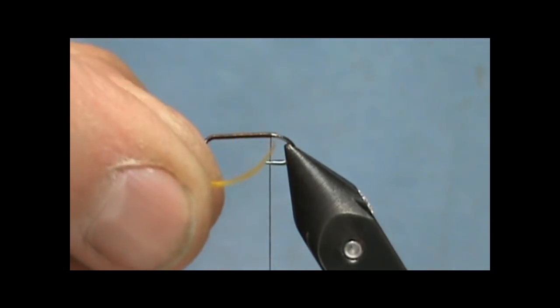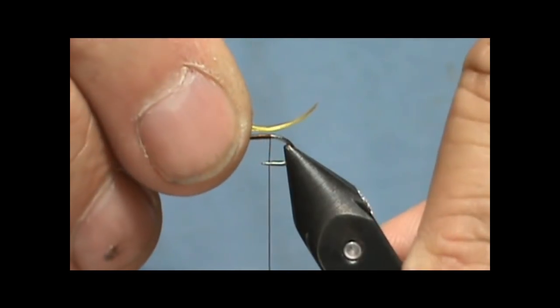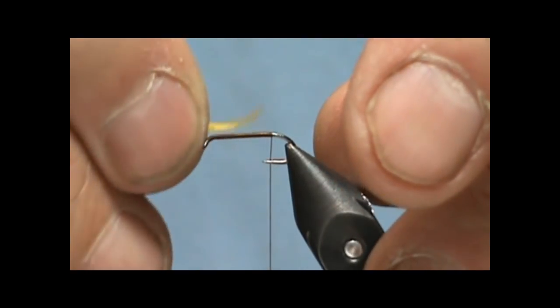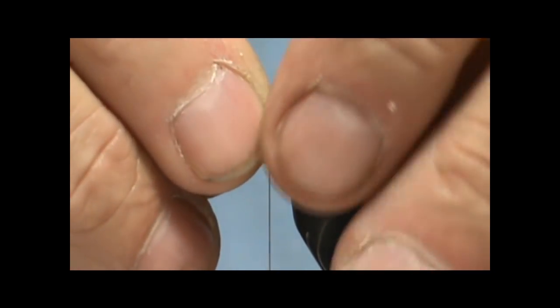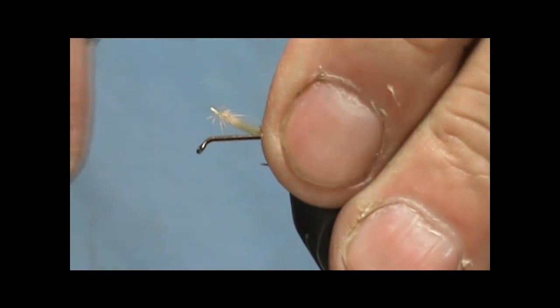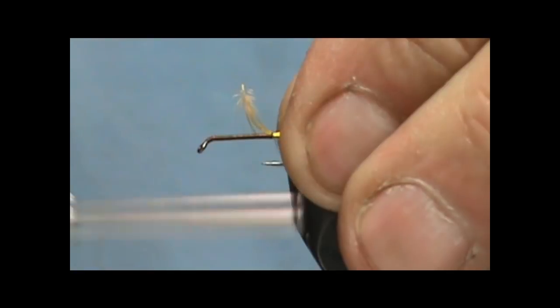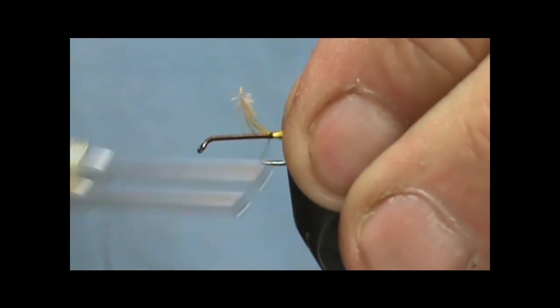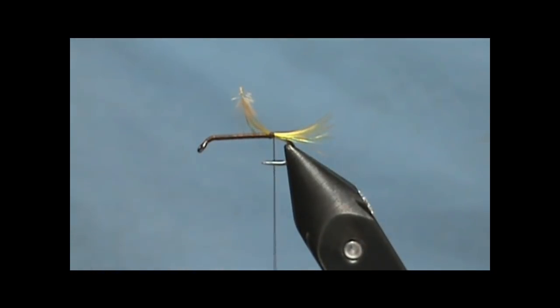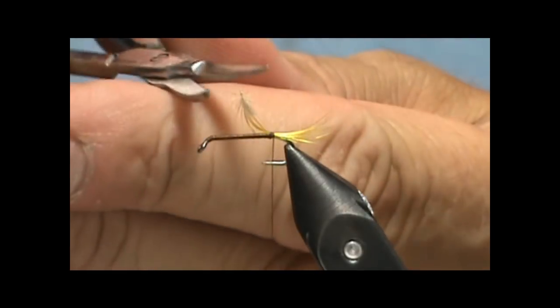I'm going to take golden pheasant crest for the tail and I want that to be about the length of the shank. Now we're going to secure that and trim the excess.